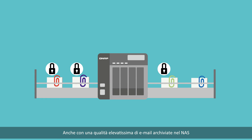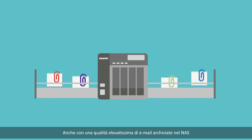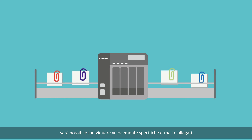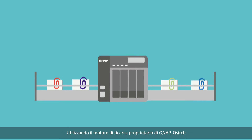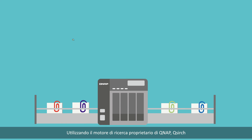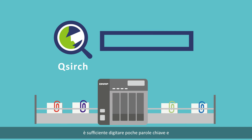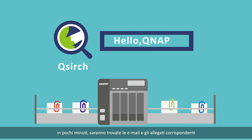Even with a huge amount of emails stored on your NAS, it is never a problem to quickly find specific emails or attachments by using QNAP's proprietary QSearch search engine. Just type in a few keywords and matching emails and attachments will be found within seconds.